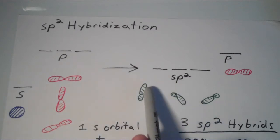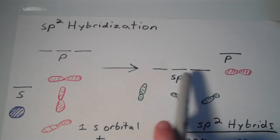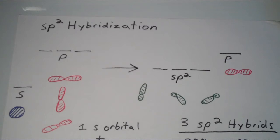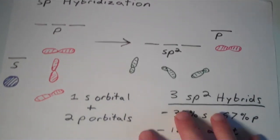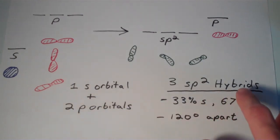So notice that the total number of hybrid orbitals that is formed, three, is the same number of standard atomic orbitals that combine together. So there's one s orbital, two p orbitals, that's a total of three, and there are three sp² hybrids as well. One s orbital plus two p orbitals, three sp² hybrids.